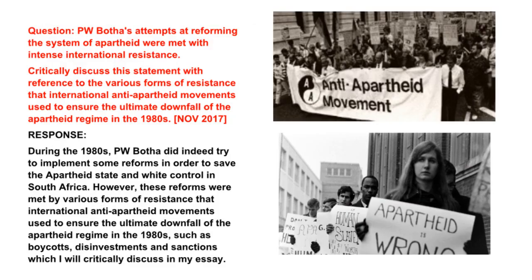Let us now look at some possible introductions to the questions. With the first question — PW Botha's attempts at reforming the system of apartheid were met with intense international resistance — a possible introductory response could be: During the 1980s, PW Botha did indeed try to implement some reforms in order to save the apartheid state and white control in South Africa. However, these reforms were met by various forms of resistance that international anti-apartheid movements used to ensure the ultimate downfall of the apartheid regime in the 1980s, such as boycotts, disinvestments and sanctions, which I will critically discuss in my essay. Now that you have taken an effective stance and gave a clear indication of what you will prove, you can then begin with the body of the essay. Keep in mind that we are going to prove the anti-apartheid organizations did indeed assist in bringing about the downfall of apartheid.